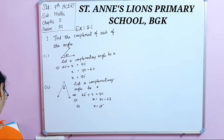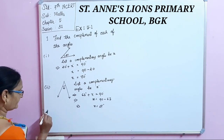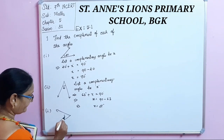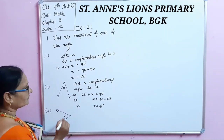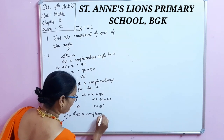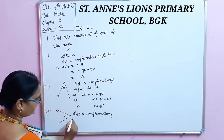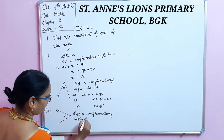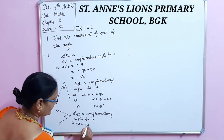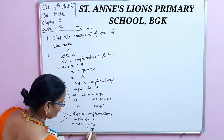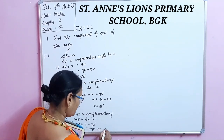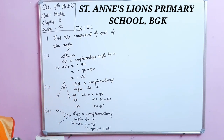The third angle is 57 degrees. Using the same method: 57 plus X equals 90 degrees. X equals 90 minus 57, which equals 33 degrees. These are the complementary angles.